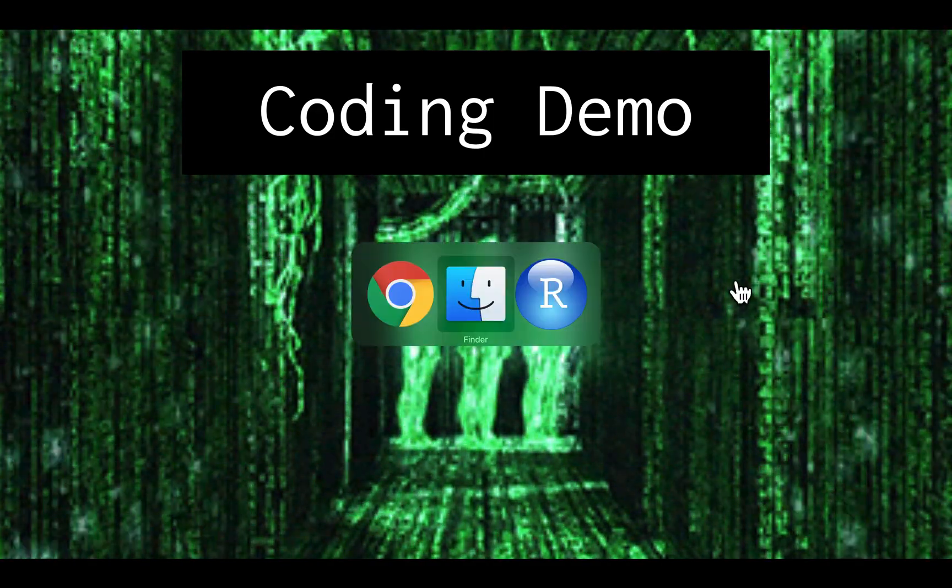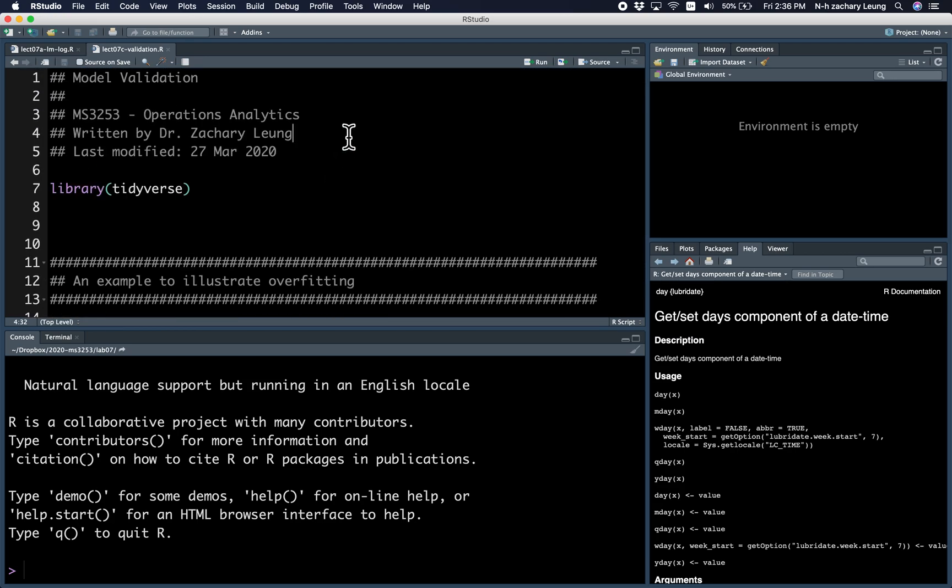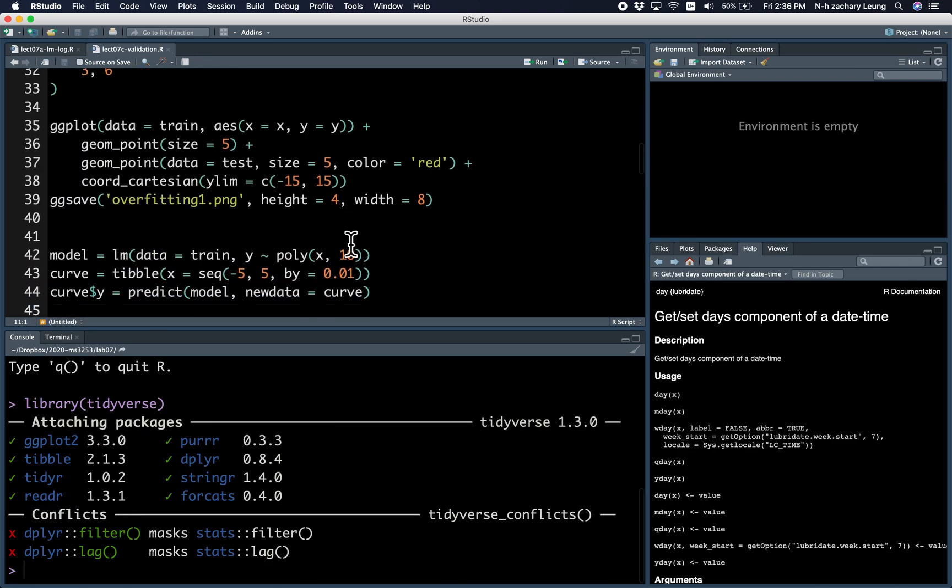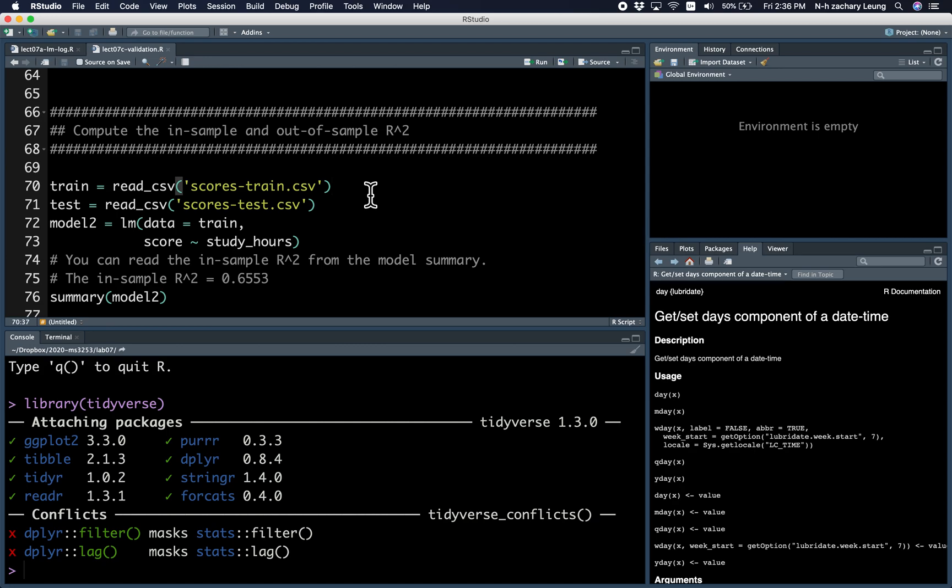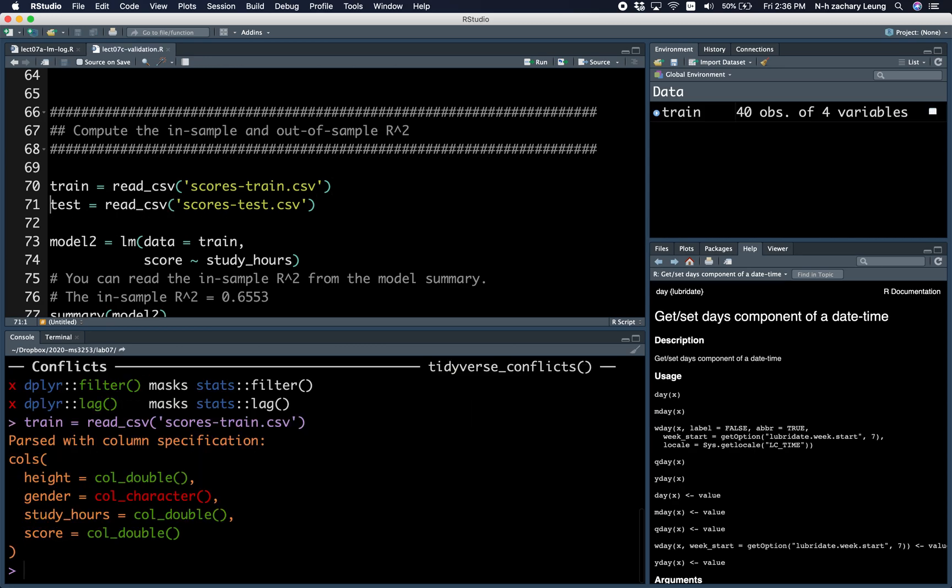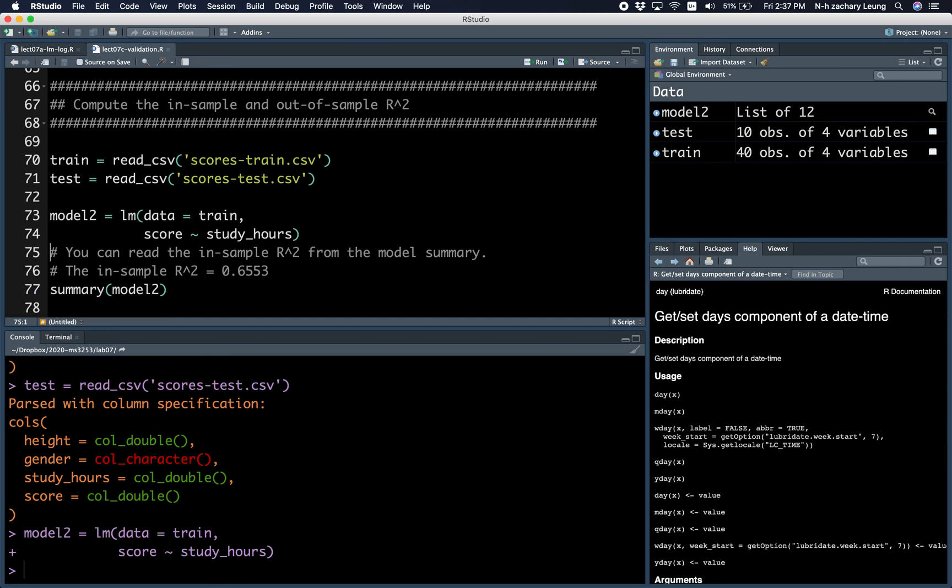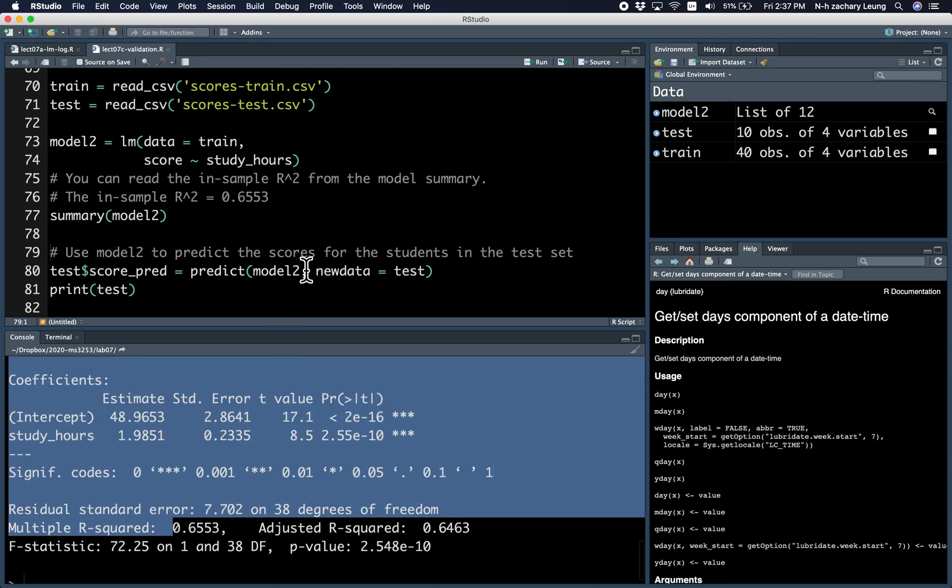Okay, here's a very quick coding demo. So, load the tidyverse, our favorite package. This is basically how I draw the plots, but I'm going to skip that. Let's load the data, the training set and the testing set. And if you want to compute the in-sample R-squared, you can just read it from the model summary. In this case, it's 0.6553.